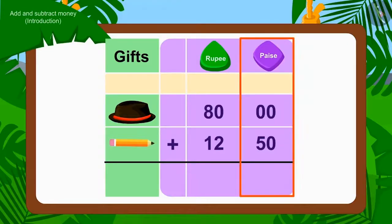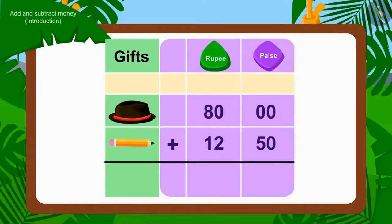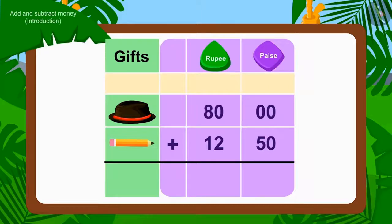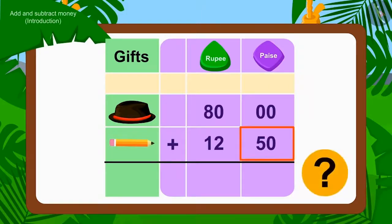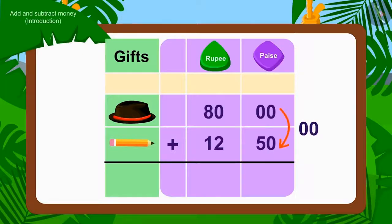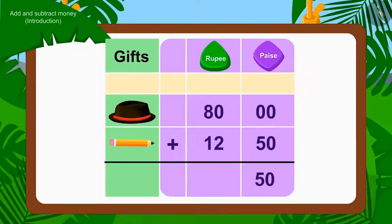First, we will add the numbers of paise. Is there an amount of paise in the cap price? No. Is there any paise in the price of a pencil? Yes — 50 paise. How much paise will there be if you add 50 paise to 0 paise? Exactly — 50 paise.